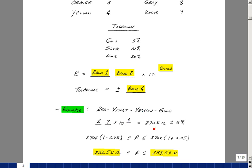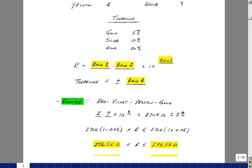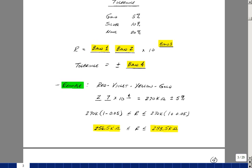And so that would be 270,000 ohms, the gold being a 5% tolerance. So the resistor could be anywhere between 5% above 270K or 5% below 270K. And that corresponds to 256.5K to 283.5K.